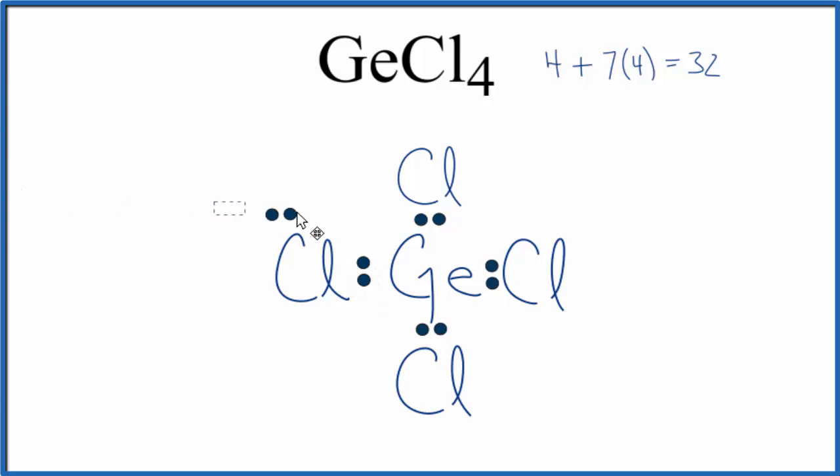Then we'll complete the octets on the chlorine atoms, and that gives us the Lewis structure for GeCl4. You'll note that each chlorine has an octet, eight valence electrons,